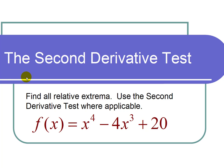This is a video on using the second derivative test. The question states, find all relative extrema. Use the second derivative test where applicable. f of x equals x to the fourth minus 4x cubed plus 20.